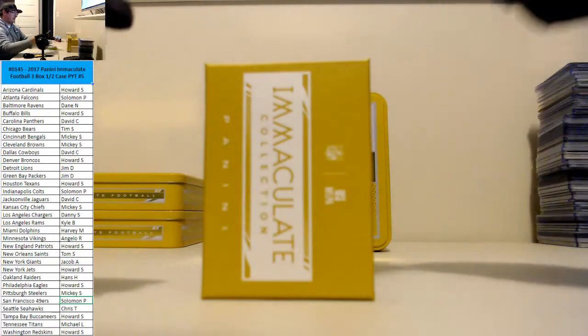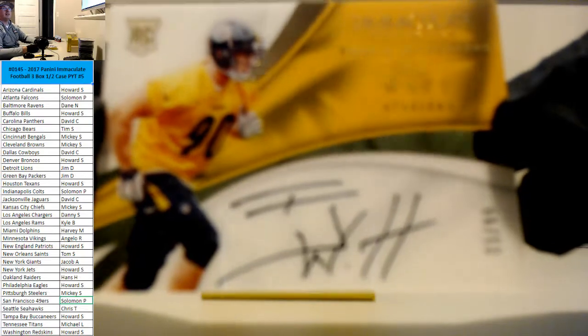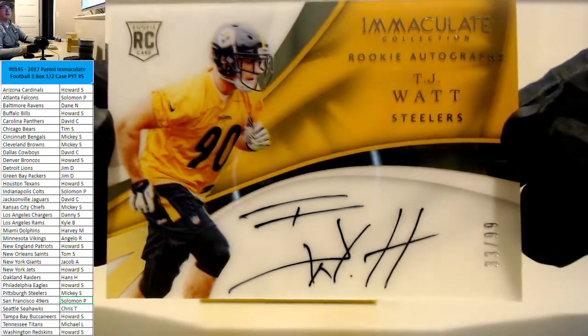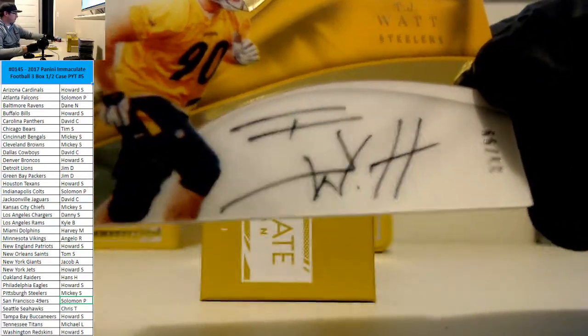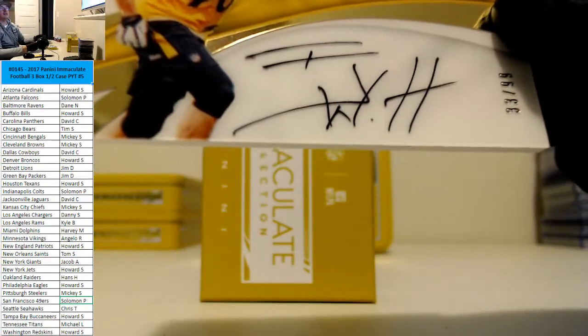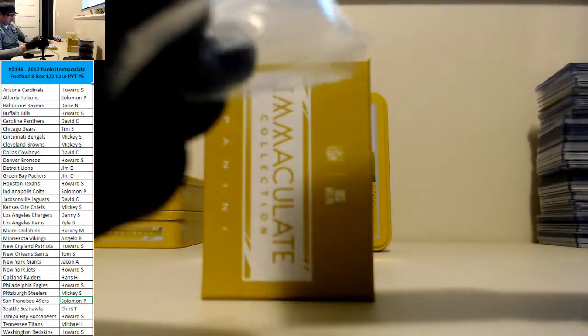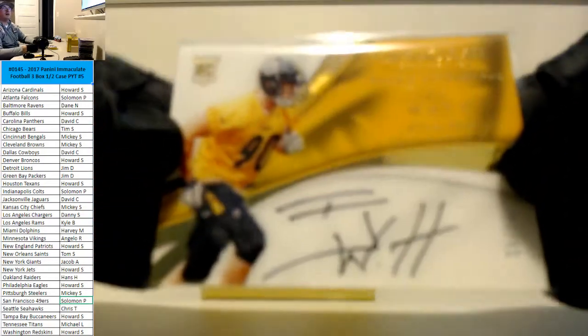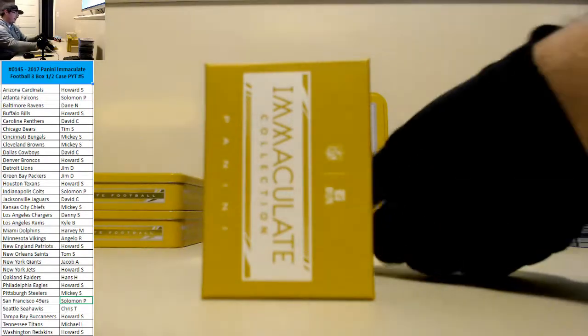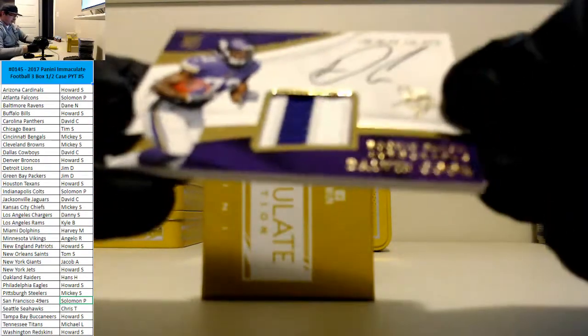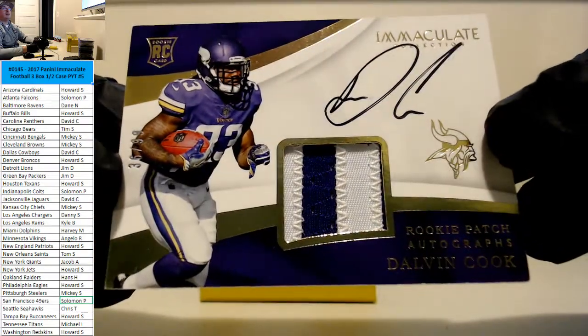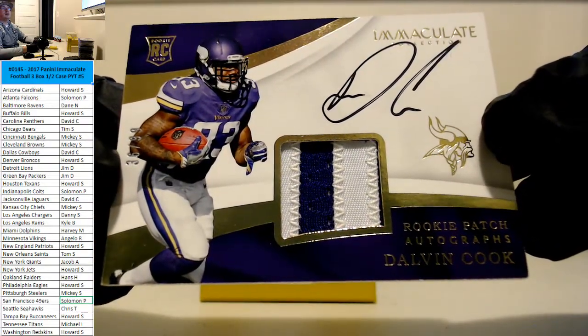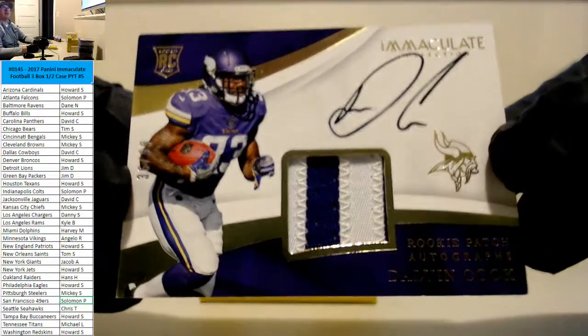And for the Steelers, TJ Watt. 33 and 99. 33 and 99 for the Steelers. Who's got those Steelers? Mickey. That's going to Mickey. And finally, RPA. Nice one here for Dalvin Cook. 36 and 99 for the Vikings. Let's go to Angelo, I believe. Nice Dalvin Cook.